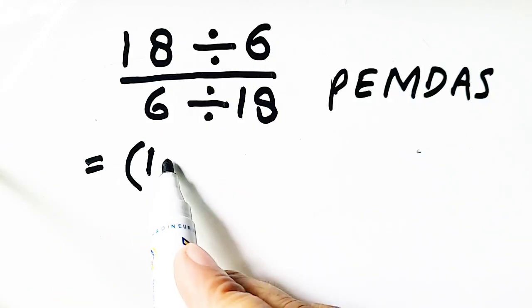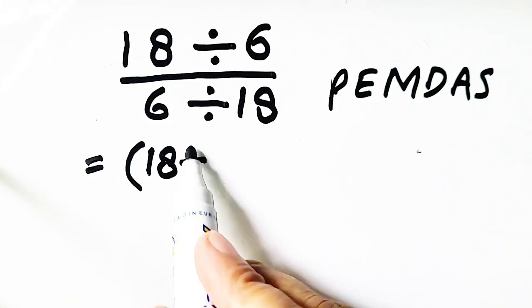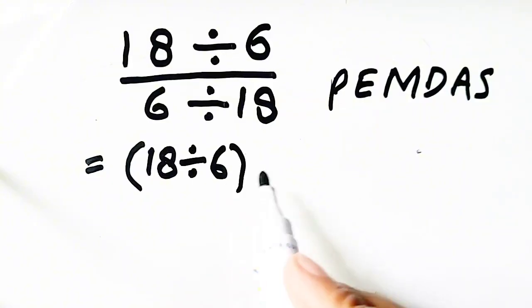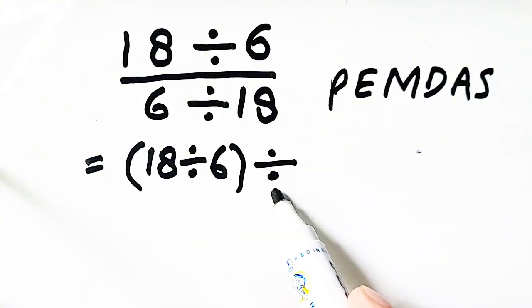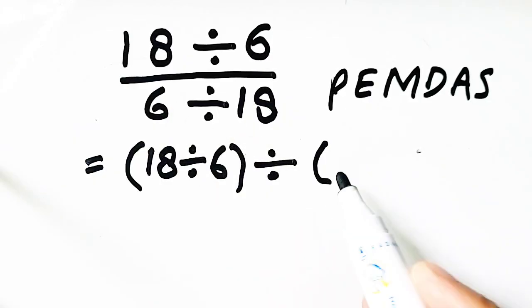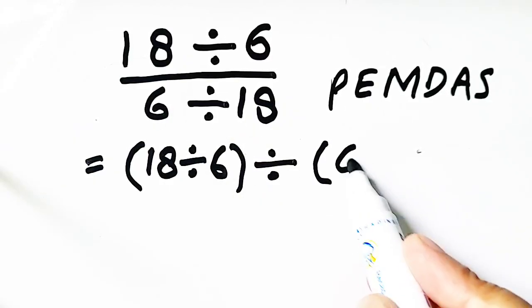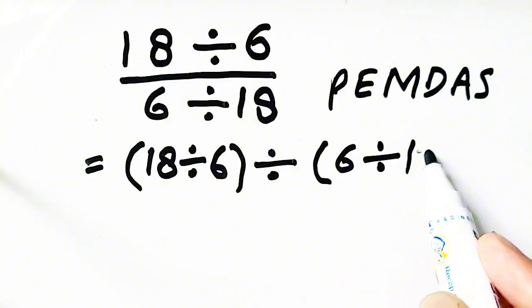The first parentheses will include 18 divided by 6, and the fraction is converted into division, and the second parentheses will include 6 divided by 18.